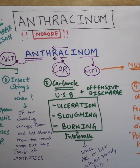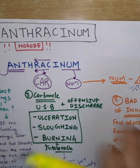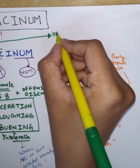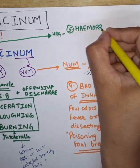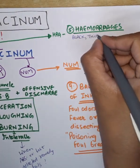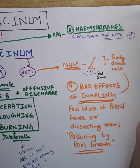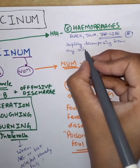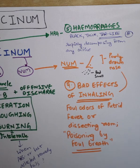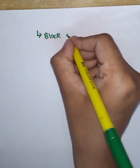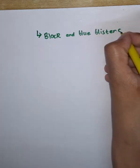We have another part: HRA. This stands for hemorrhages — very marked, black, thick, and tar-like. The characteristic feature is that they are star-like, which is very important. The hemorrhage rapidly decomposes and can come from any orifice; it will always be thick, tar-like, and rapidly decomposing.